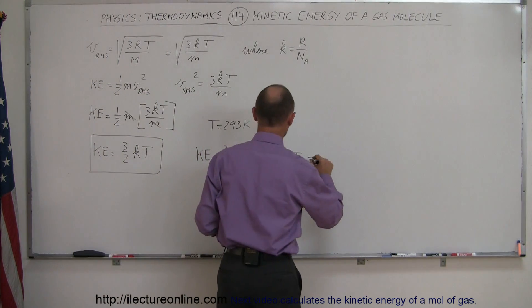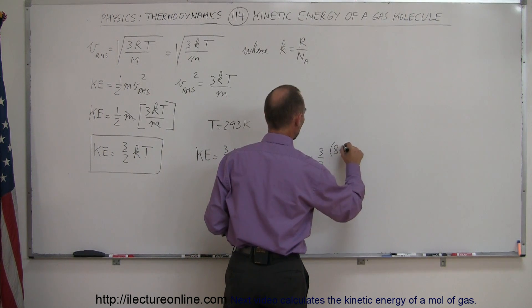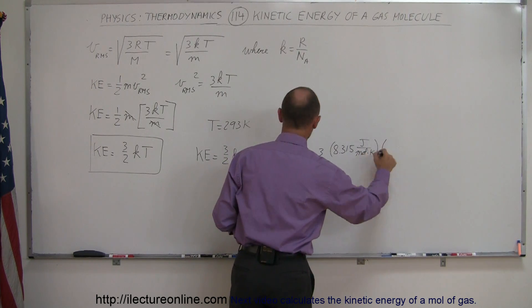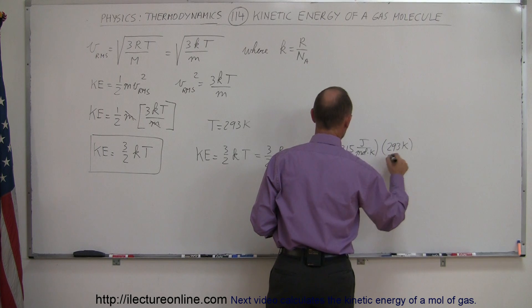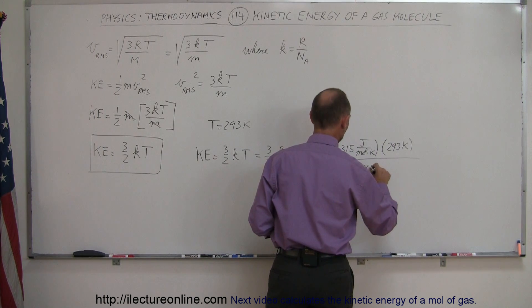And when we plug in the numbers, so this would be equal to 3 over 2 times R is 8.315 joules per mole times Kelvin, times the temperature which is 293 Kelvin, and Avogadro's number is equal to 6.02 times 10 to the 23 molecules.